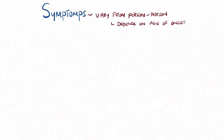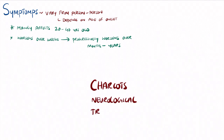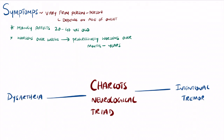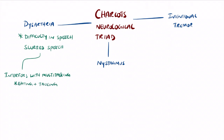Symptoms vary from person to person and depend on the age of onset. MS mainly starts at around 20 to 40 years old, especially in females, and worsens over weeks then progressively over months to years. There is a classic presentation known as Charcot's neurological triad, which consists of three things: intentional tremor, dysarthria, and nystagmus. Dysarthria is difficulty in speech because the Broca's area is affected by plaques, leading to slurred speech, which interferes with daily tasks and cognitive behaviour.